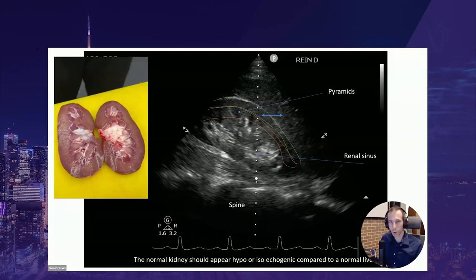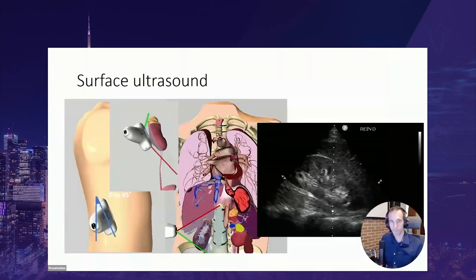Usually we don't see the collecting structure because they are empty in a normal setting. On surface ultrasound, the best and simplest way to assess the kidney in a patient lying down is to go by the side at about the mid-axillary line. When approaching the kidney that way, you may need to rotate the probe a little to obtain the full longitudinal view, since the kidney is often at an angle in the abdomen.